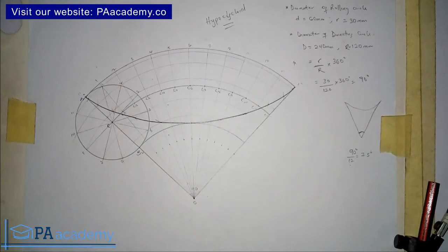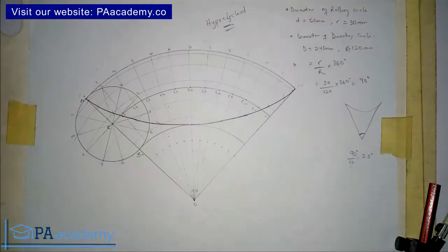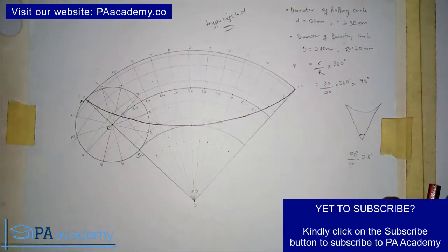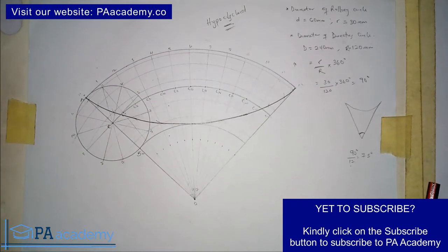Hello and welcome to PA Academy. This is part two of the video on hypocycloid. In part one, I showed you how to draw a hypocycloid, and this is what we're having. In this part, I'm going to show you how to draw a tangent and a normal to a hypocycloid.